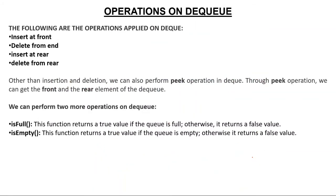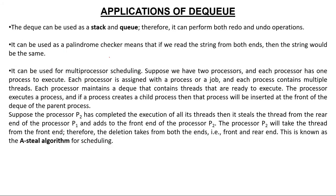Now let's look at the operations we can perform in a double ended queue. We can insert at front — which was not possible in other queues. We can delete from the rear end, which also was not possible in other queues. Insert at rear is the same as in other queues. Other than insertion and deletion, we can also perform a peek operation — to see the front element. The peek operation gives you the front value, and in a double ended queue, it can also give you the rear value. There are two more operations: is_full, which checks if the queue is full, and is_empty, which checks if the queue is empty.